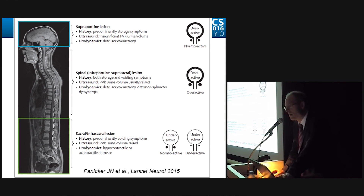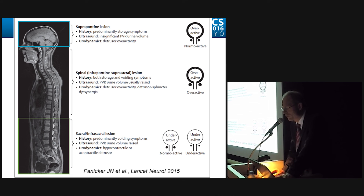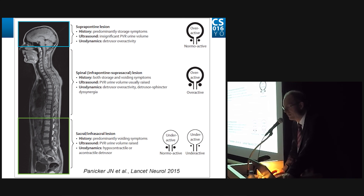At the end, ask about the level of the lesion. Is it a suprapontine lesion? Is it a spinal lesion? Or is it a sacral and infrasacral lesion? Each of these lesion levels will present with a specific history, specific findings on ultrasound and post-void residual, and a specific urodynamic pattern. Thank you.